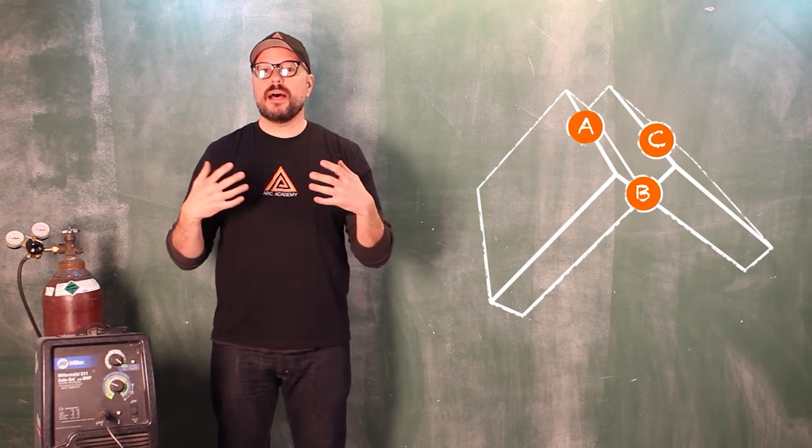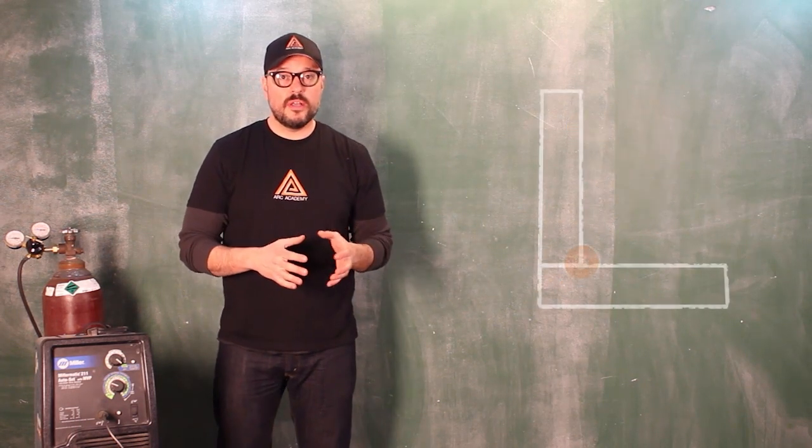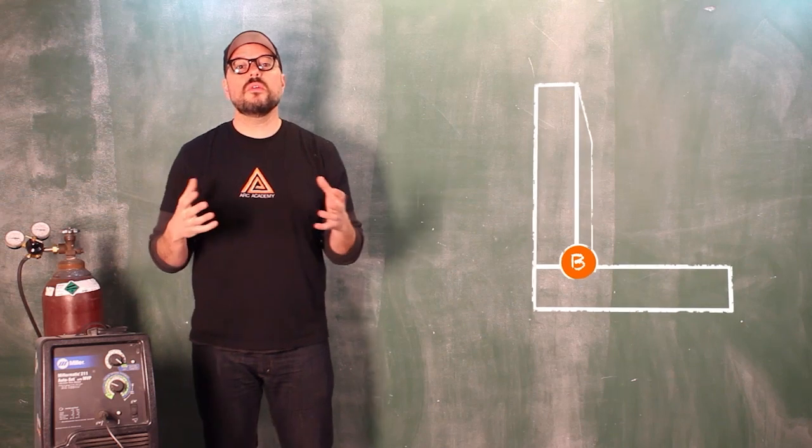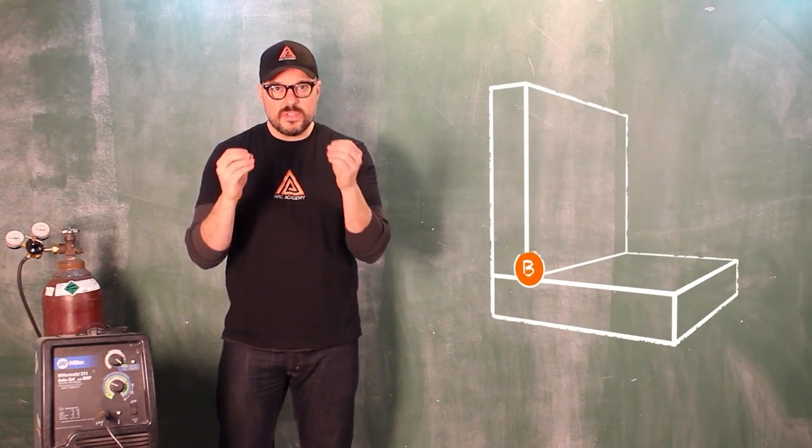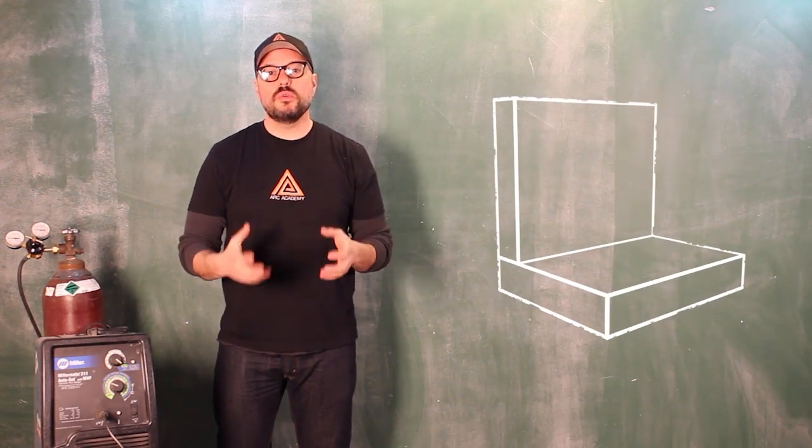Now, when you're talking about a closed inner corner joint, those two lines are no longer there. You actually have to visualize them as you move through the weld.